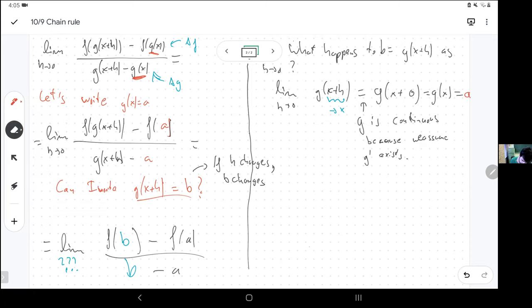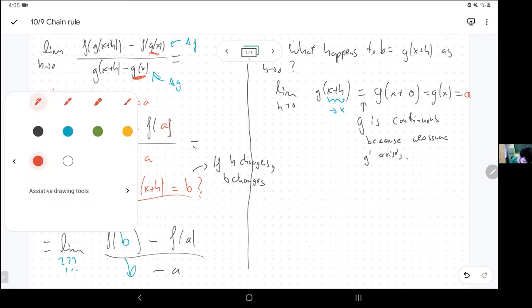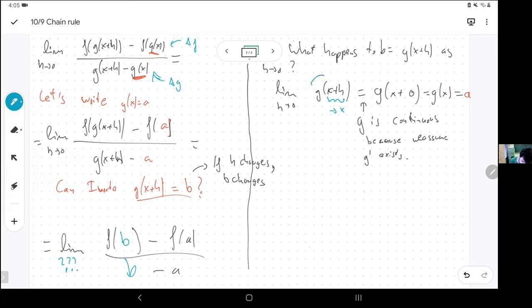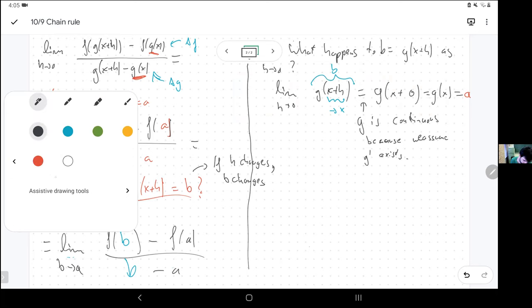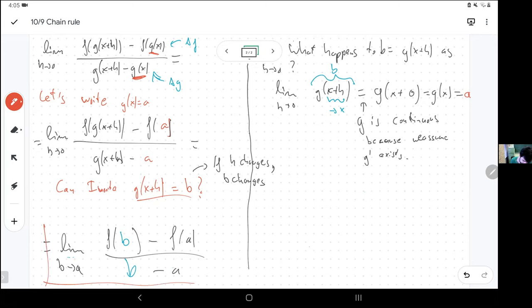So this is g of x, which also by the way I'm calling a. Okay. So what is b approaching? It turns out that as h approaches zero, b is approaching a. All right. Well, I'm running here, I guess. And now, if I just stare at this formula, that formula is just literally on the nose of the definition of the derivative.